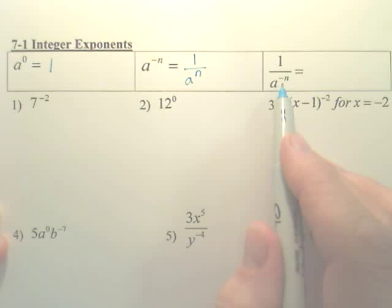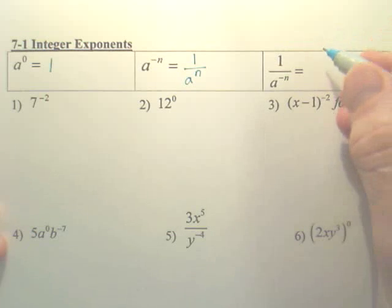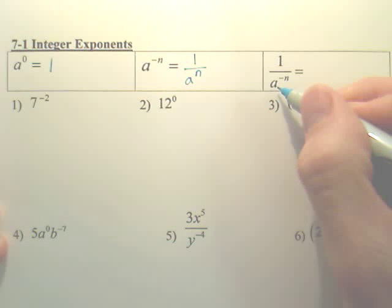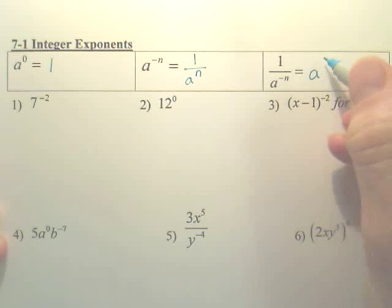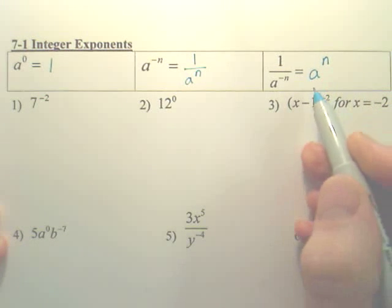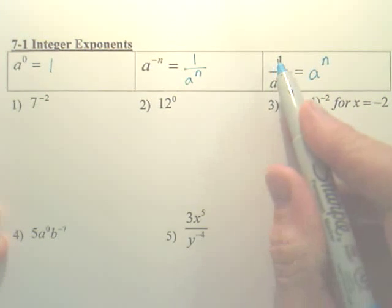Now, if the negative is on the bottom and I want it to be a positive exponent, instead of being at the bottom, you flip it to the top. Your answer is simply going to be a to the nth because this goes to the top.